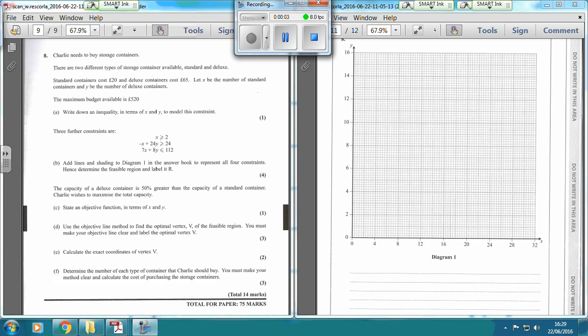Okay, and then the final question is all about linear programming. So let's have a look at this. There are two different types of storage containers available, standard and deluxe. Standard containers cost £20 and deluxe containers cost £65.